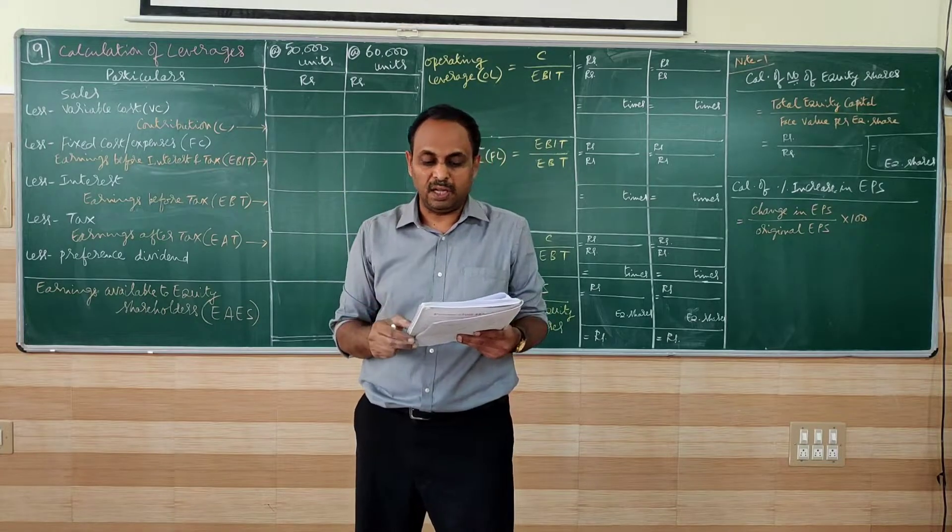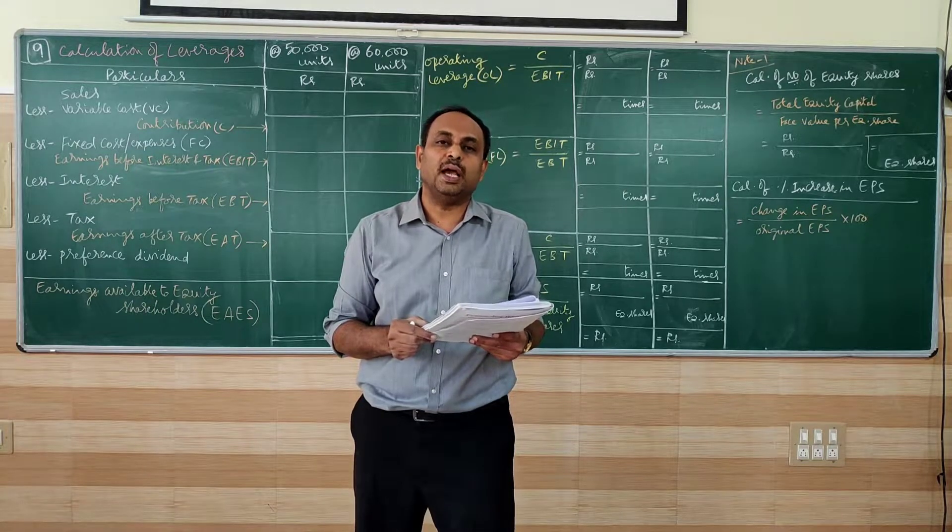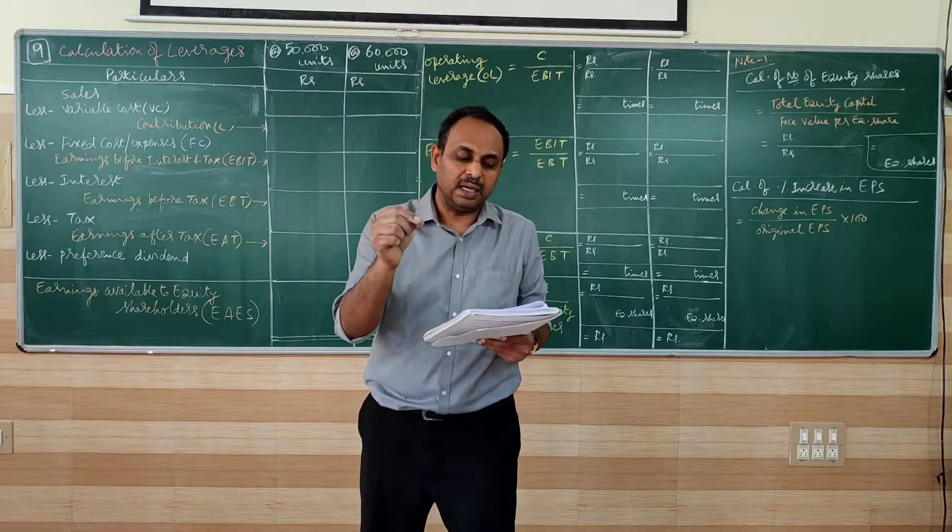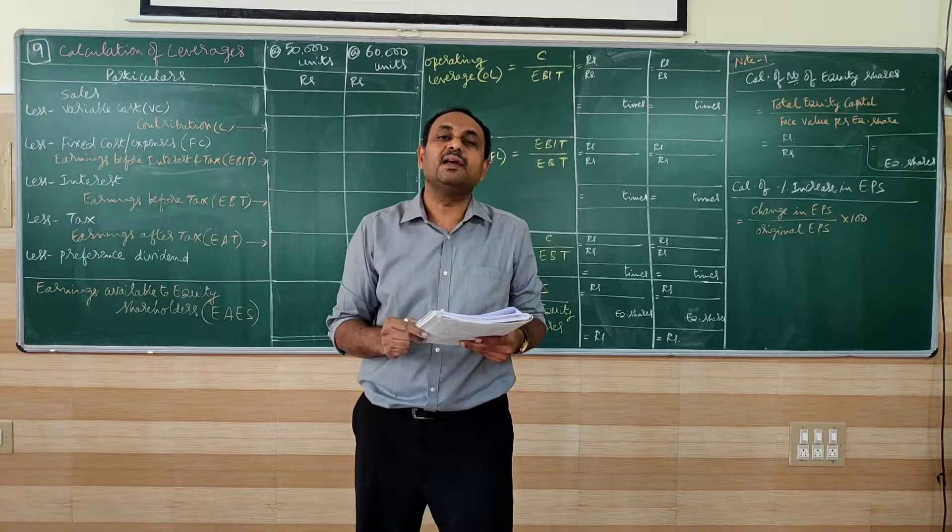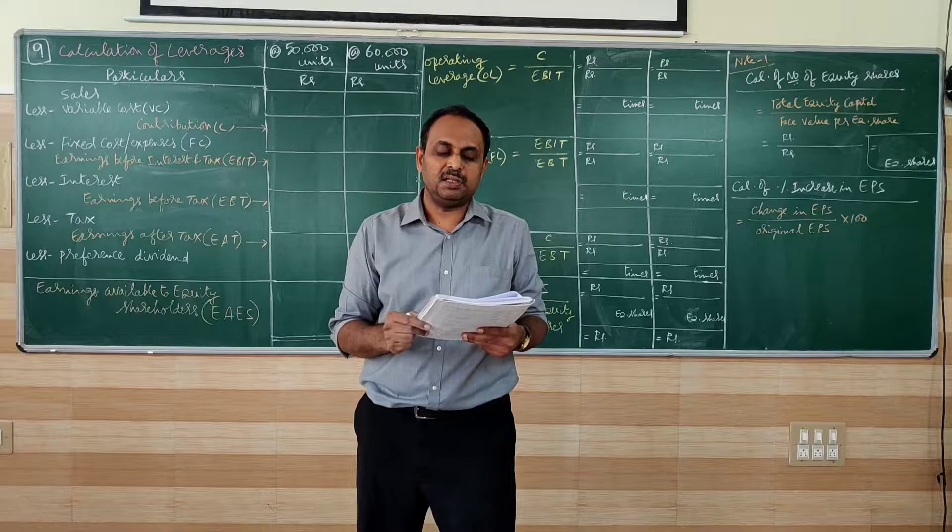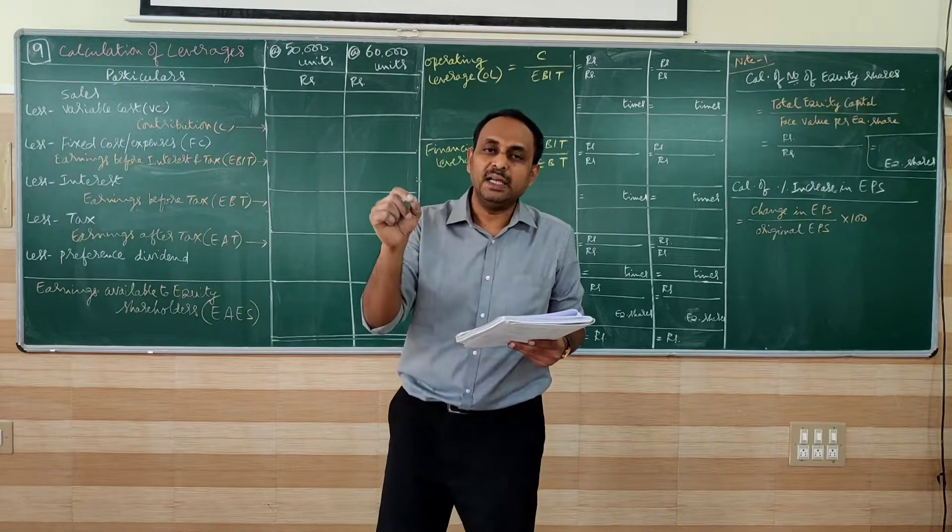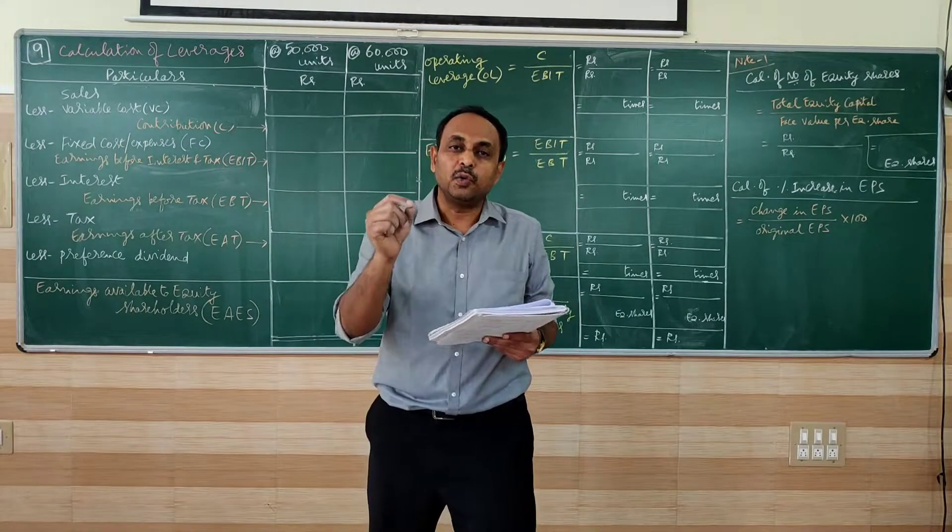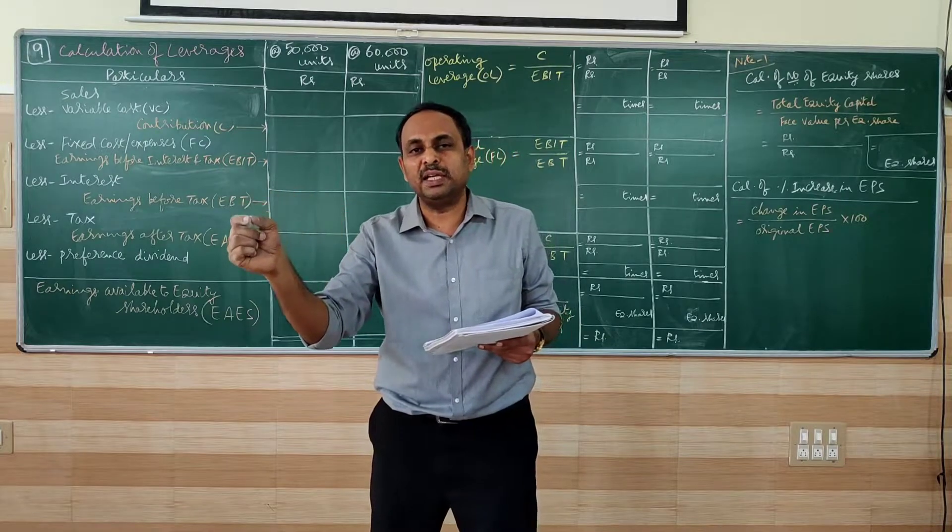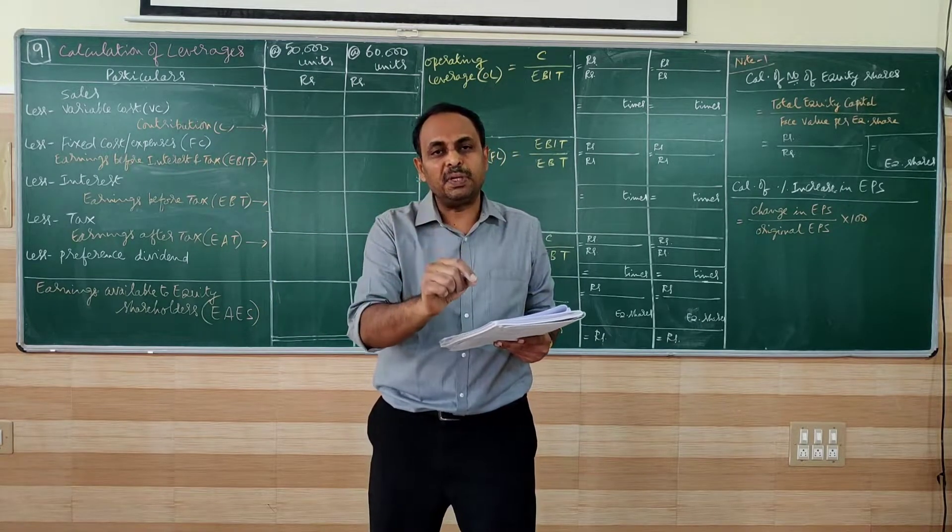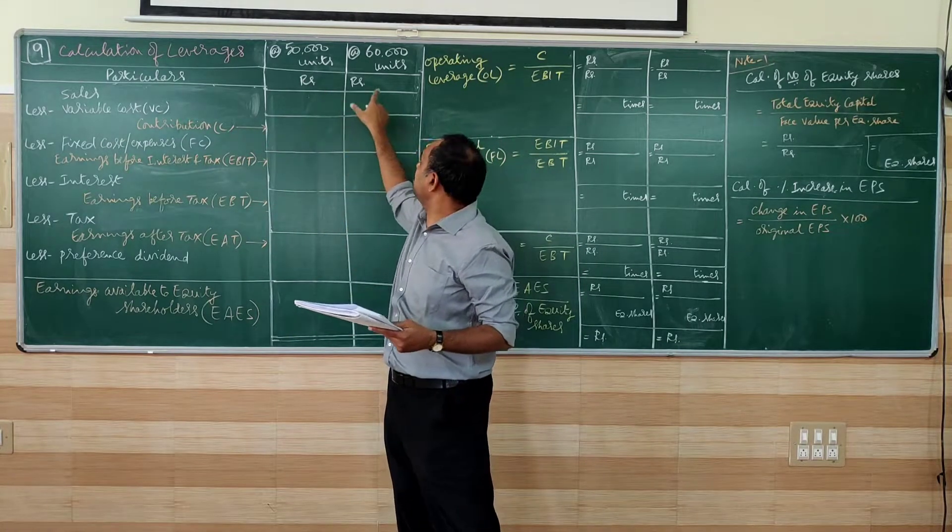In the problem given, 10% debt of rupees 2 lakhs. 10% is the interest rate, the debt is 2 lakhs, the loan is 2 lakhs. The next sentence is given: the sales increase at 20% from 50,000 units to 60,000 units. That means existing is 50,000 units, 20% increase. 20% increase of 50,000 is 10,000. 50,000 plus 10,000 is 60,000. So we have to have two situations: given situation and increased situation.